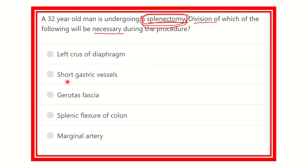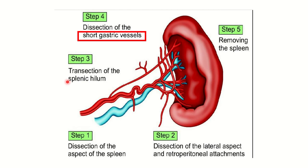We can see the spleen and the different vessels present. The stepwise approach begins: first, dissection of the anterior aspect of the spleen; second, dissection of the lateral aspect; and third, transaction of the splenic hilum, which must be transacted.